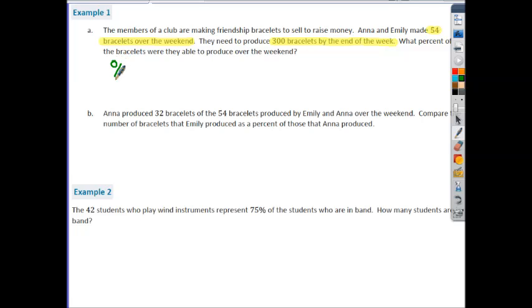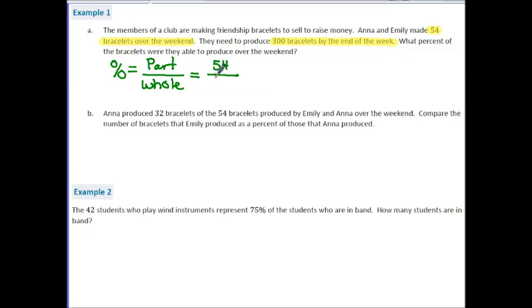Taking our formula, we have percent equals part divided by whole. So in this case, the part is the number of bracelets they produced over the weekend, which we highlighted as 54. And that's divided by the whole, which is the total number they need to produce, in which case we highlighted 300 is the total number of bracelets they need to produce by the end of the week. So when I divide these two, I get 0.18. And so this is translated into 18 percent.